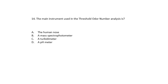Question 14. The main instrument used in the threshold odor number analysis is the human nose, a mass spectrometer, a turbidometer, or a pH meter. It's the human nose.